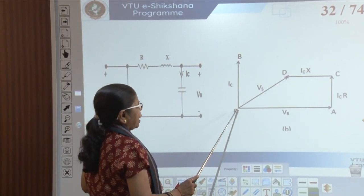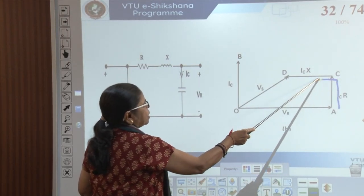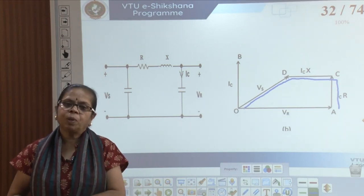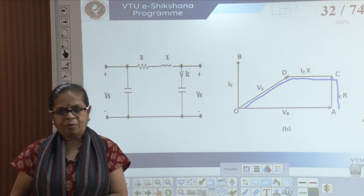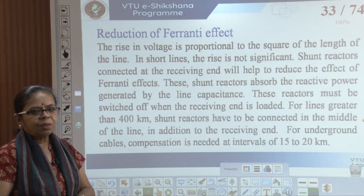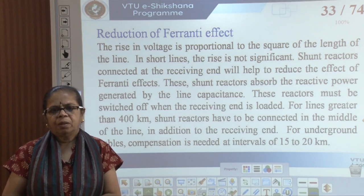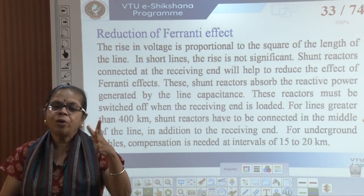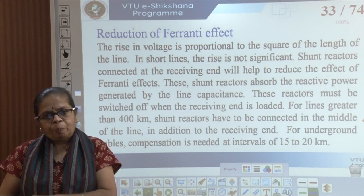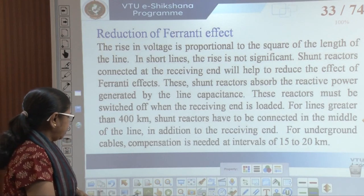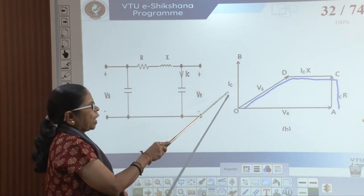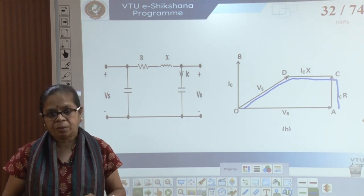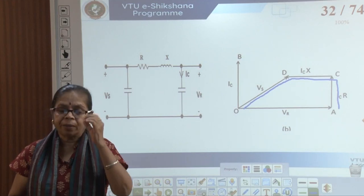This occurs when the distributed capacitance of the line draws a leading current greater than that drawn by the load. Not only under no load but even under light load — when the receiving end current is small compared to the charging currents — you can observe the Ferranti effect. This capacitor charging current causes a voltage drop in the line inductance in phase with the sending end voltage, making the receiving end voltage greater than the sending end voltage, which can damage loads. VS is less than VR; longer the line, more prominent the effect. The rise in voltage is proportional to the square of the length of the line — that is why in short lines we do not even model the capacitance.